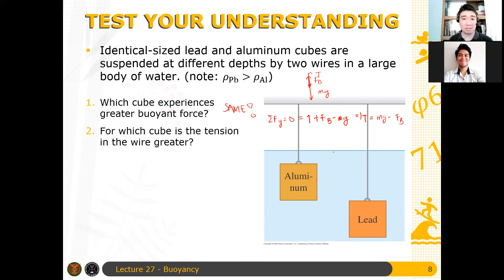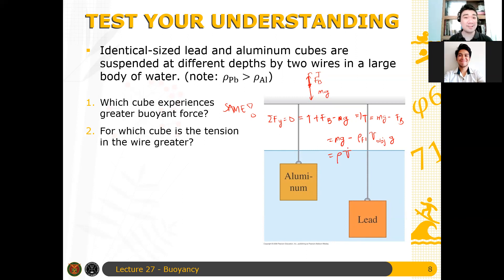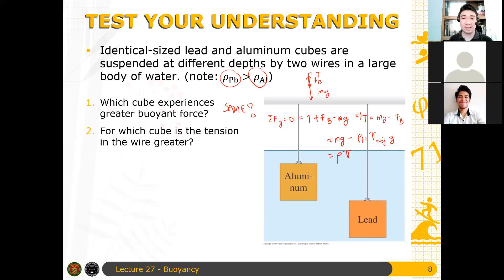The buoyant force only depends on the density of the fluid displaced — that is, the density of the fluid times the volume of the object times g, since the object is fully submerged. So it means the tension depends on the total mass of each block. Which one has greater mass? Remember, mass is density times volume. They have the same volume but different densities — the density of lead is greater than aluminum. Therefore, lead has the greater mass, and hence the greater tension.